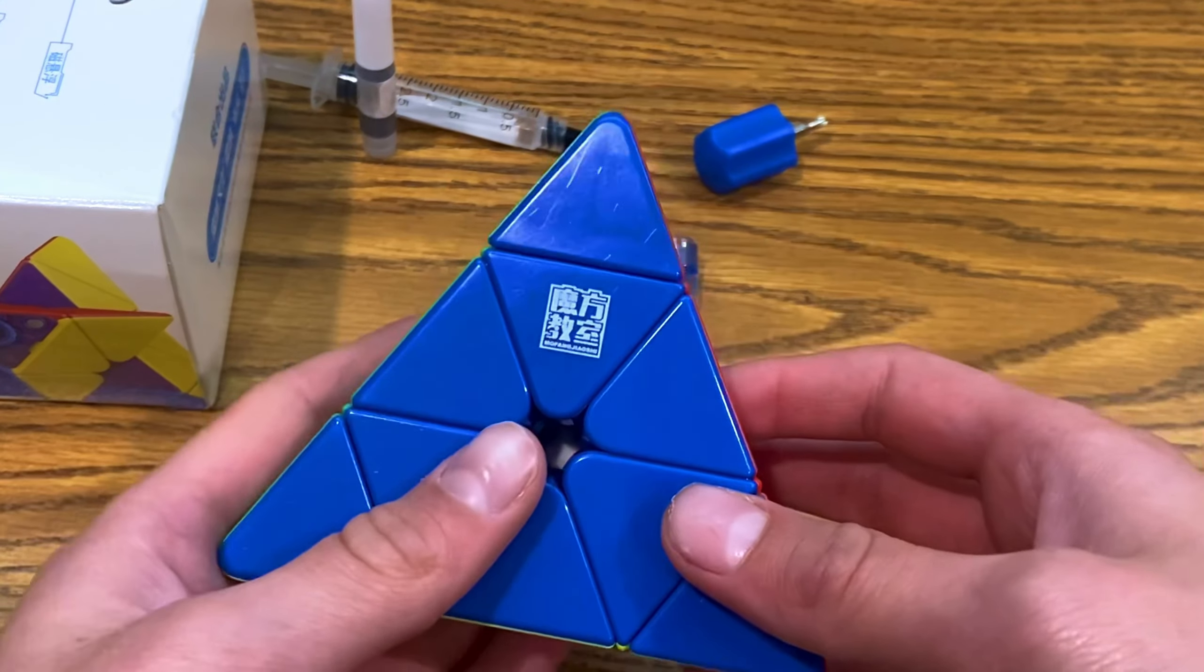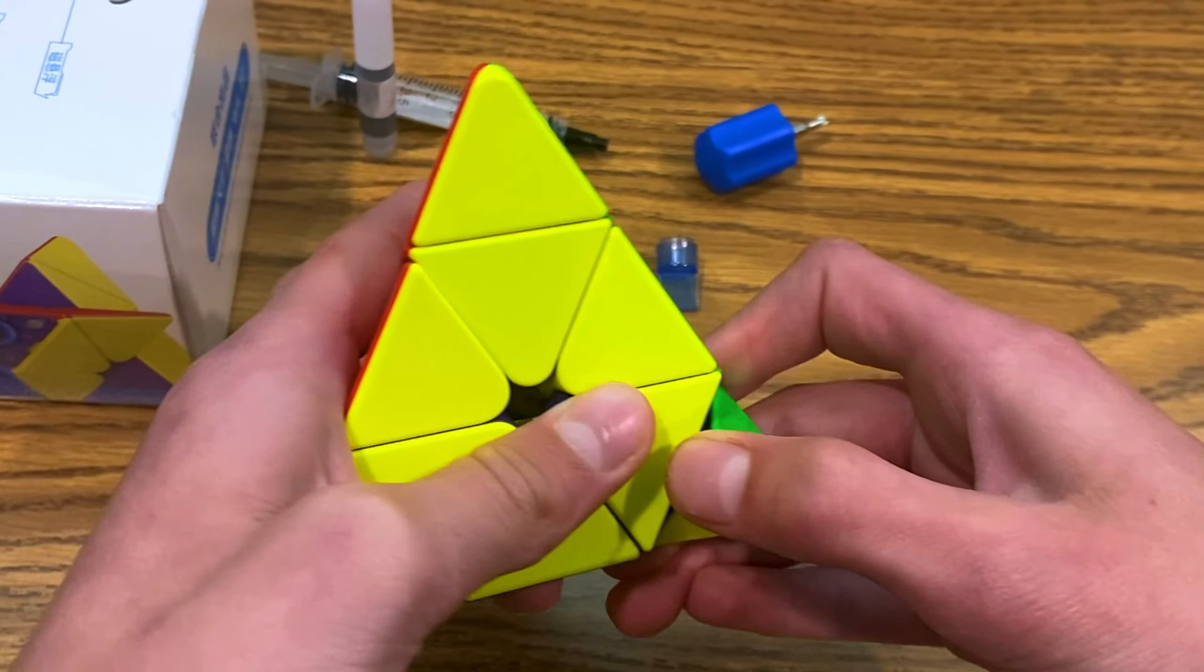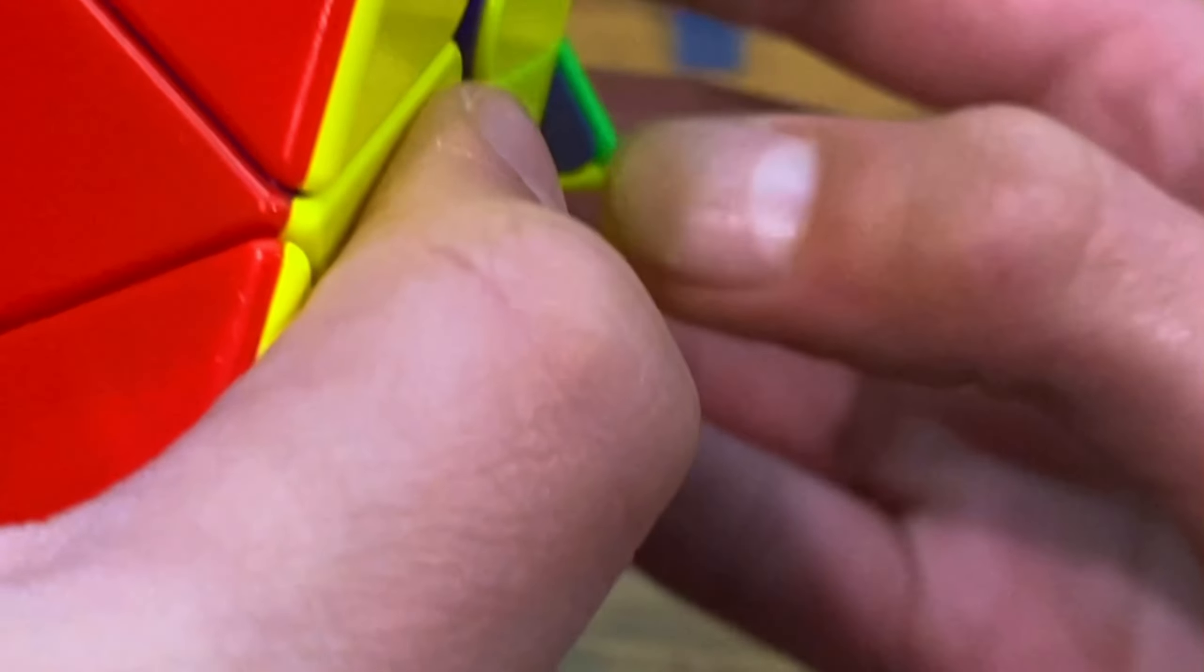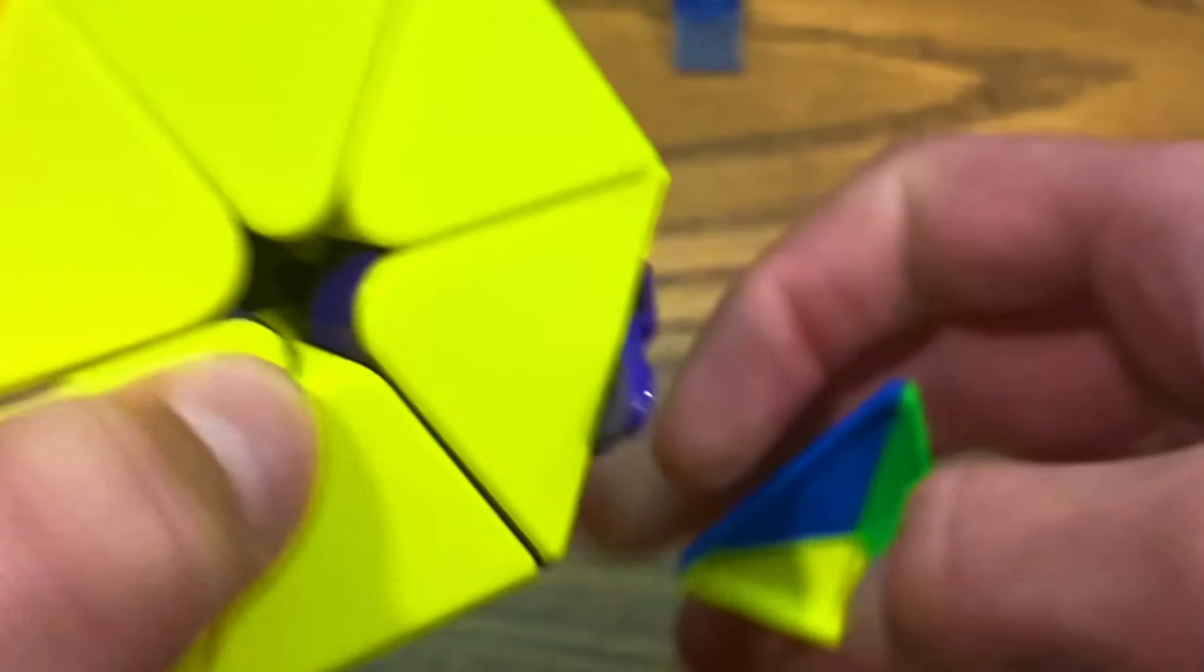First thing that you want to do is take off all the tips. Sometimes, they can be kind of hard to get off, or you can just put your fingernail in there, and kind of just try to get it off like that.